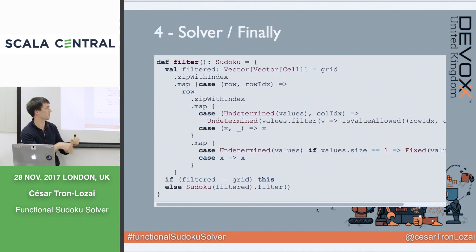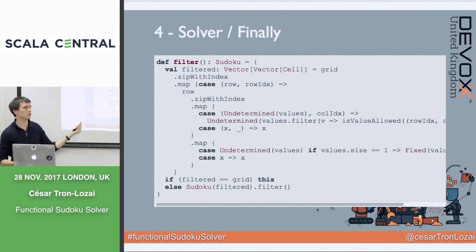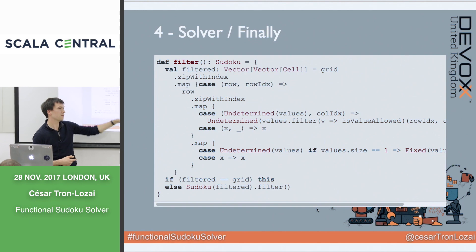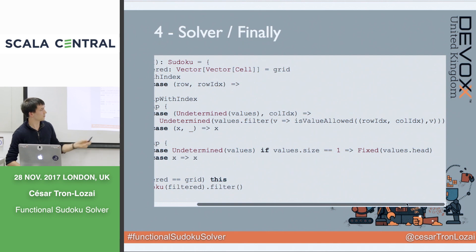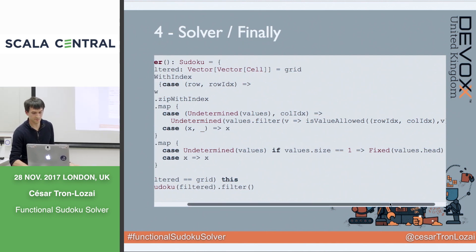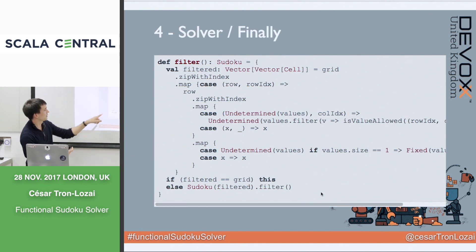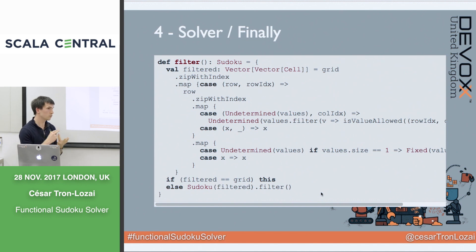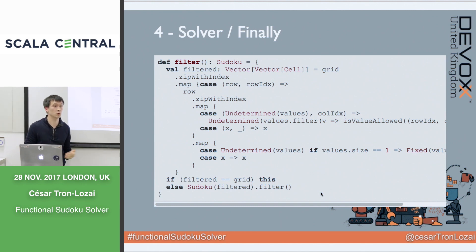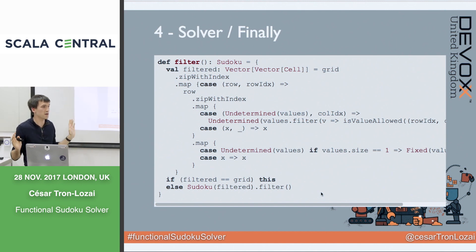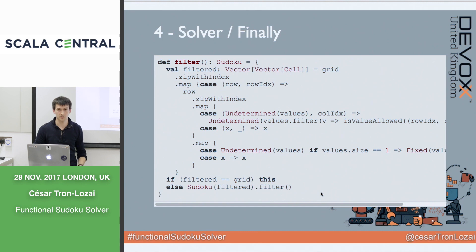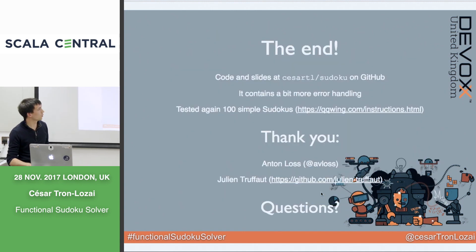We also need to convert: if an Undetermined cell has only one value remaining, it becomes a Fixed cell with that number. Then I check if the filtered grid is the same as before — if so, I haven't progressed. That means either I've found the solution or I'm stuck and cannot solve this grid with pure inference alone. If progress was made, I recursively create a new Sudoku with the filtered grid and call solve again. That's the end.